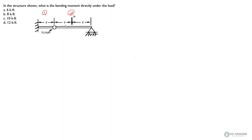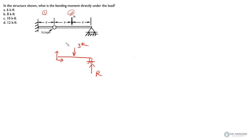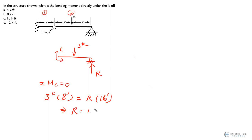For the second member: we have a roller providing one vertical reaction, a three-kip load at the midpoint, and at the hinge the connection transfers shear and axial force. We don't need to worry about the internal force at the hinge because we can easily solve for the roller reaction by taking the moment at the hinge — call it point C. Taking moment at point C: three kip times eight feet equals R times 16 feet, so R equals 1.5 kip.